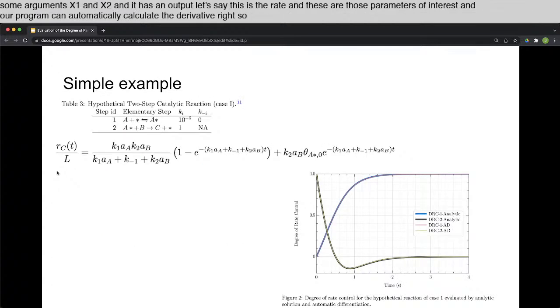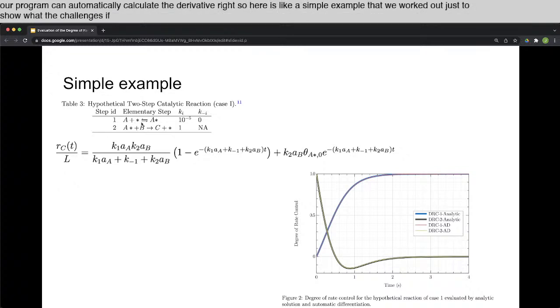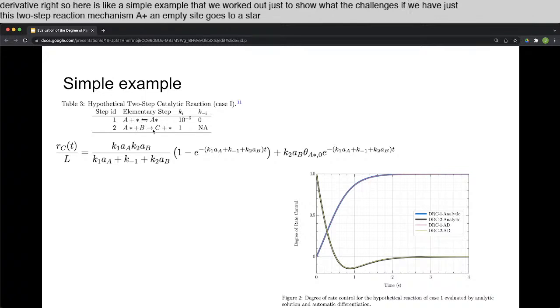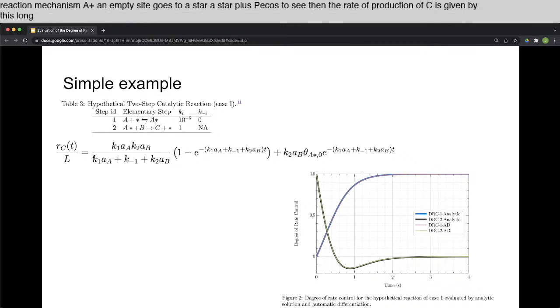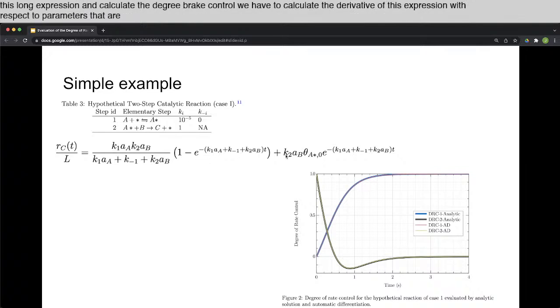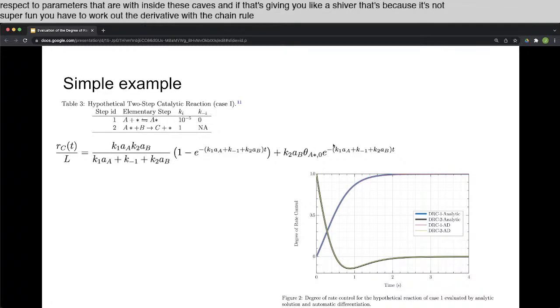So here's a simple example that we worked out just to show what the challenge is. If we have just this two-step reaction mechanism, A plus an empty site goes to A star, A star plus B goes to C, then the rate of production of C is given by this long expression. And to calculate the degree of rate control, we have to calculate the derivative of this expression with respect to parameters that are within, inside these k's. And if that's giving you a shiver, that's because it's not super fun. You have to work out the derivative with the chain rule all the way through, and then you have to implement the program to do that.